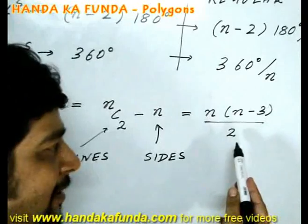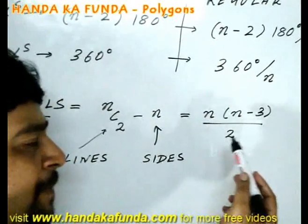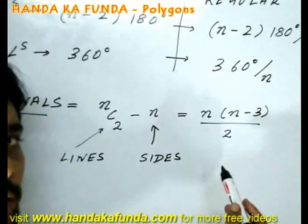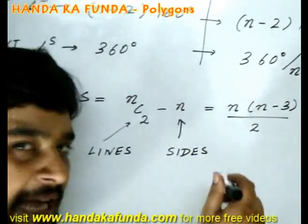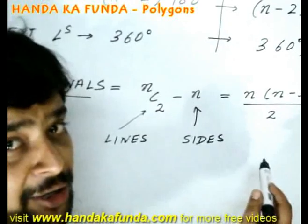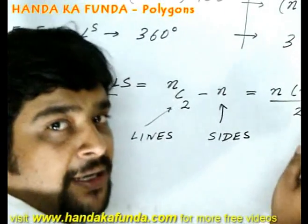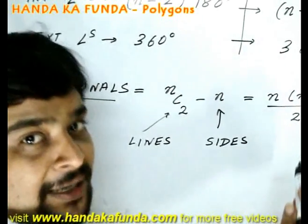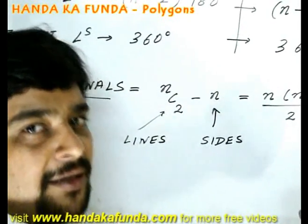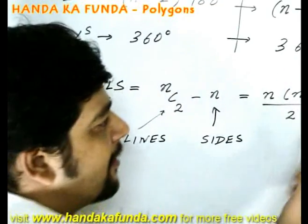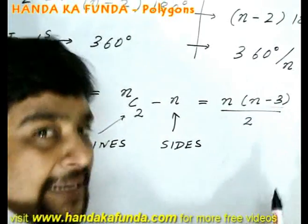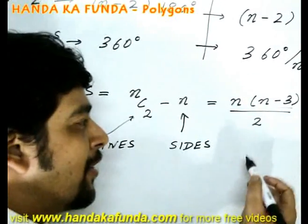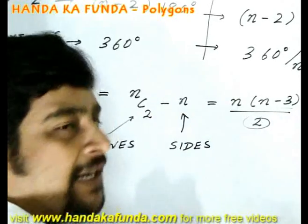There is another method for arriving at this formula. Say you pick up any particular vertex in the entire polygon. Now, you cannot draw a diagonal to that vertex itself. You cannot draw a diagonal to the vertex just on its left because it will be a side. You cannot draw a diagonal to the vertex just on its right because that will also be a side. So from every vertex, you can draw n-3 diagonals. Total number of diagonals is n into n-3.